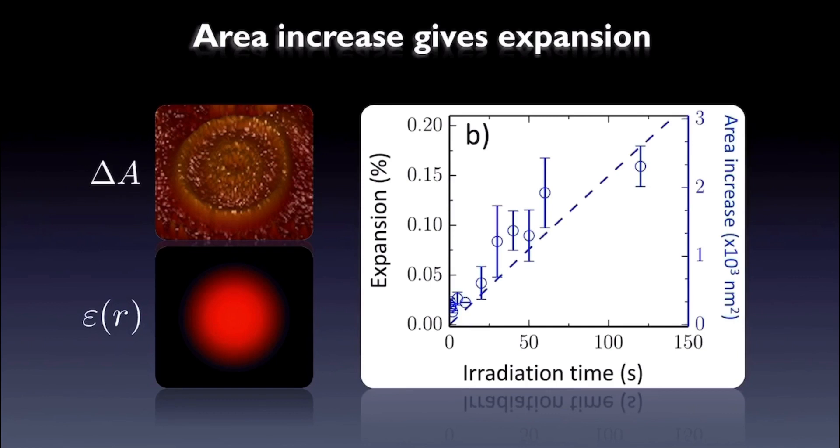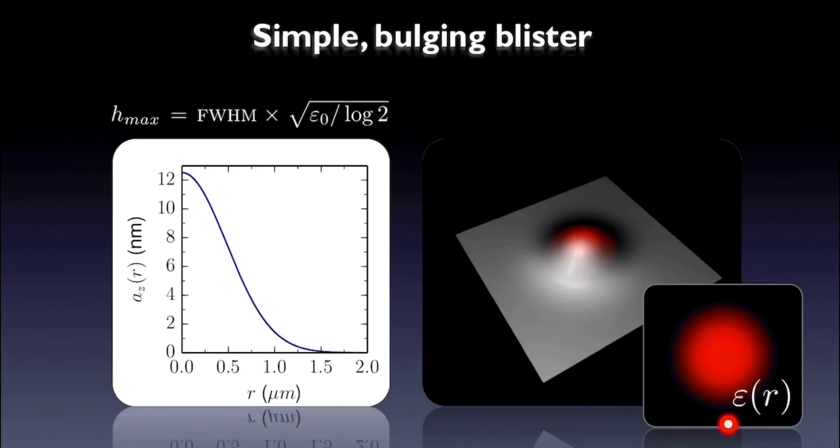So using these expansion fields, we could simulate the blister formation using thin-sheet elasticity theory. Without adhesion, we find that the lowest energy geometry is that simple bulging blister with this type of height profile. However, at the same time...